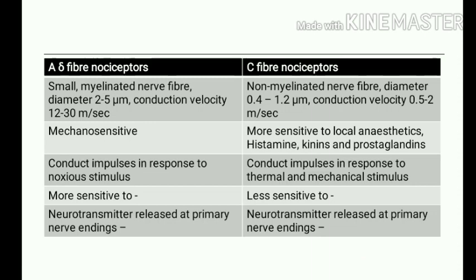A-delta nociceptors conduct impulses in response to noxious stimuli and are more sensitive to electrical stimulus, whereas C fibers conduct impulses in response to thermal and mechanical stimuli and are less sensitive to electrical stimuli. The neurotransmitter released at the primary nerve ending of A-delta fibers is glutamic acid, whereas at the C fiber ending it is substance P.